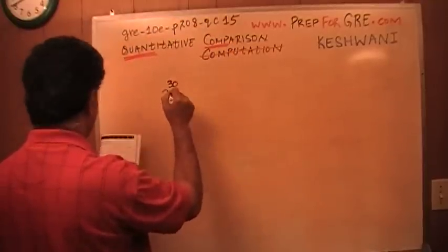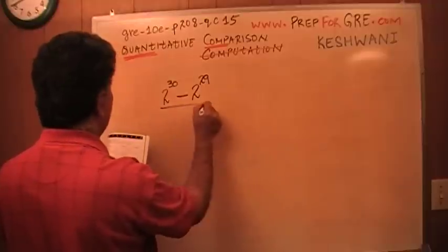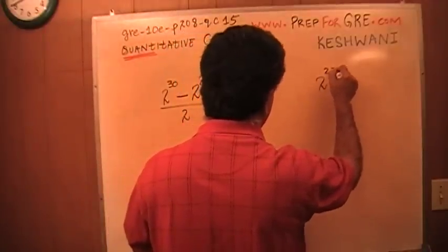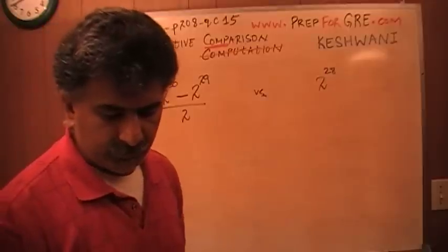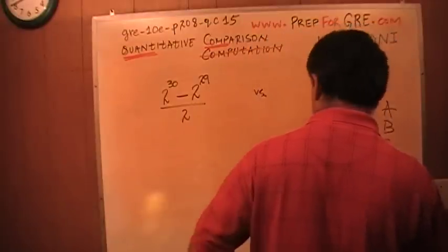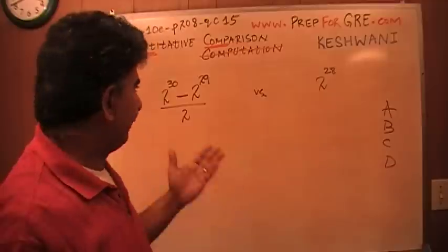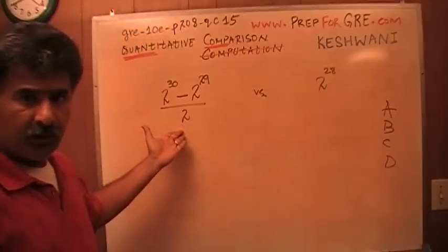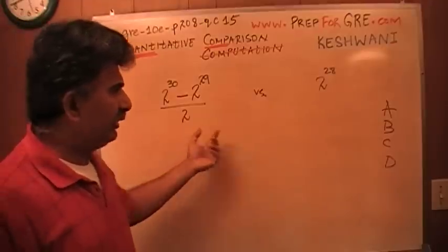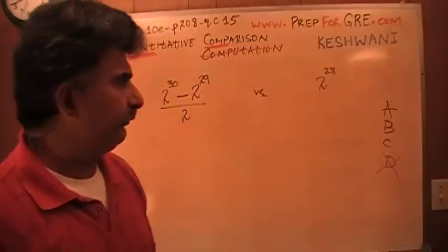2 raised to 30 minus 2 raised to 29 over 2 versus 2 raised to 28. Well, the very first thing you have to realize is that there are four possible answer choices here: A, B, C, D. Even though there are four possible answer choices, in this particular case, whenever you find numbers in the two columns, nothing else, there has to be an answer. It rules out D. It can never be D. Answer is either A, B or C. Let's take a look at it.